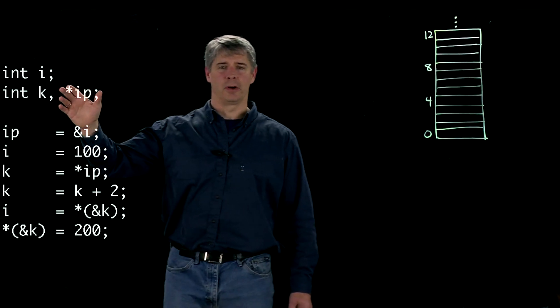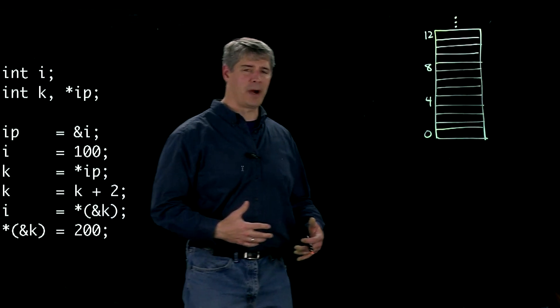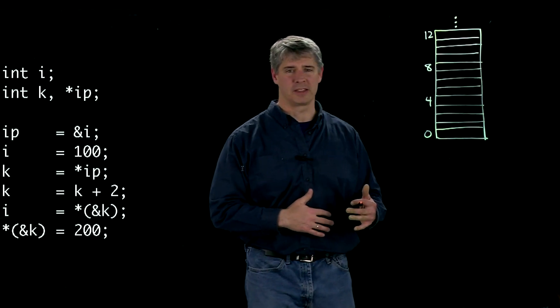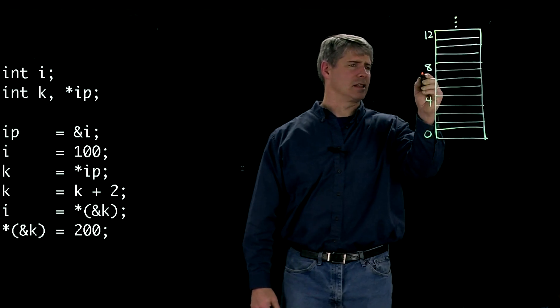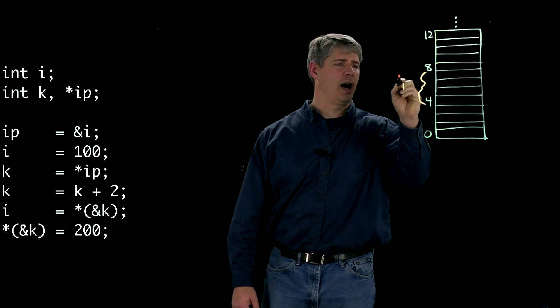So here's our simple code. The first thing we do is we define an integer i. This tells the compiler it needs to allocate 4 bytes to hold that integer. And let's say that the compiler decides to put them here. So I'm going to call that i.